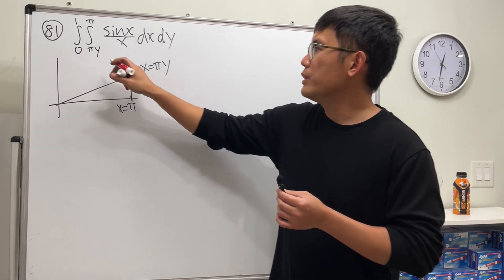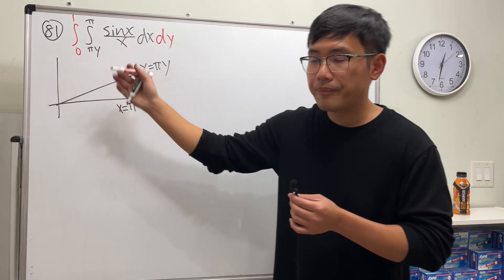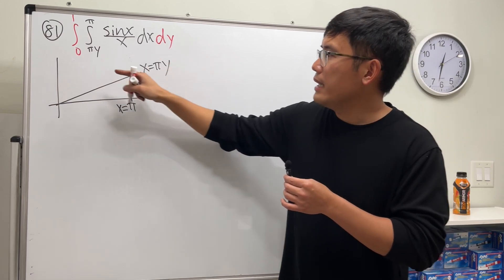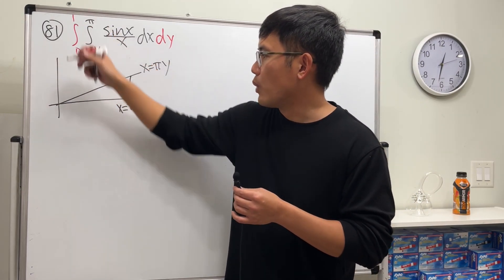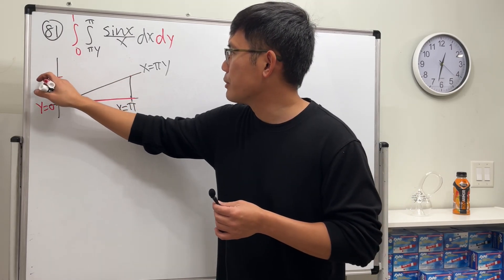And then next we look at dy. So I'll put this down in red. If we look at dy, y goes from zero to one, so this is y equal to zero.